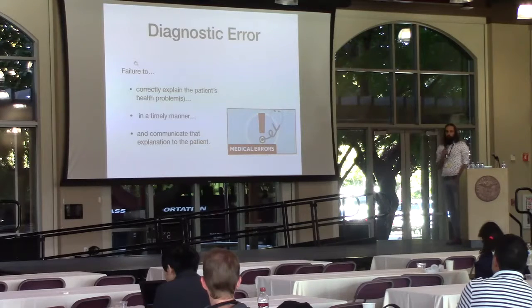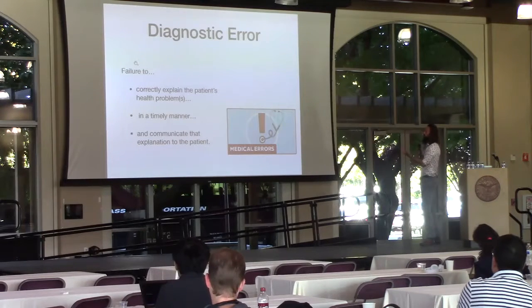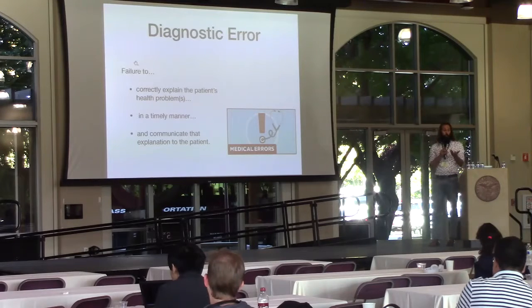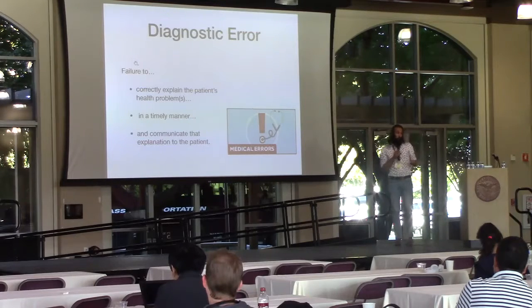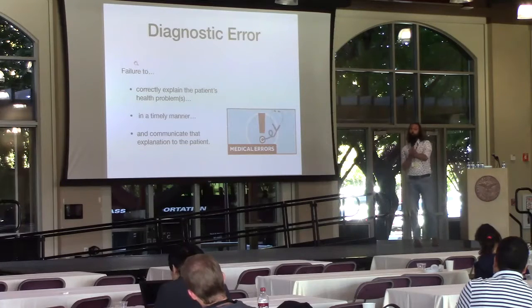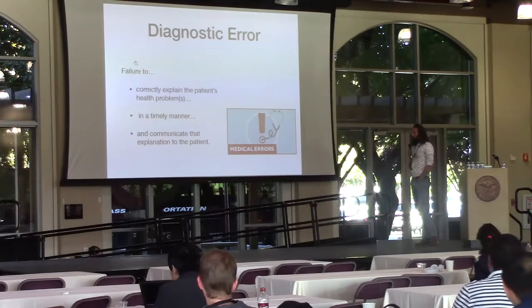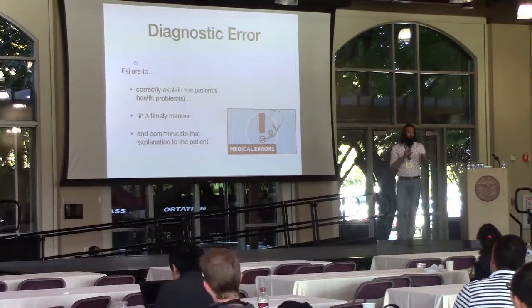One key problem that clinical decision support often runs into is diagnostic errors. By definition, diagnostic errors are the failure to correctly explain the patient's health problems — the symptoms the patient presents — and you want to know what really is the diagnosis. But also if you don't do this in time, we count this as an error. So if you take many attempts and get this wrong multiple times, or you spend a year and eventually get there, we consider this a diagnostic error. And interestingly, something we often don't pick up on, the failure to communicate and explain the diagnosis to the patient is also an error.